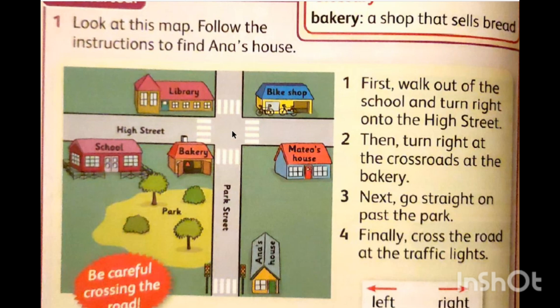At the bakery — you will turn right at the bakery, at the crossroad. Number three: then go straight on past the park. Here is the park. Number four: finally, cross the road — means walk across the road at the traffic light. Here is the traffic light, and beside it is Anna's house.